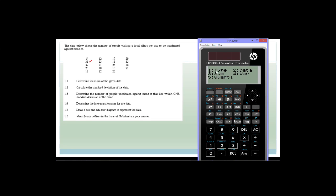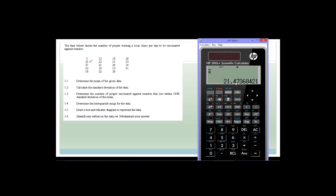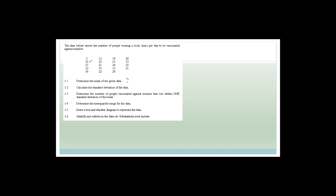Now we need to look at the different things — there's type, data, sum, var and quote. I'm going to go to var for variables. So now we've got N, which tells you how many elements you have in your set, the mean, and sigma X which is the standard deviation. They've asked for the mean of the data, so we press 2 and equals. And there you go — 21.47. So the mean of the data is 21.47.